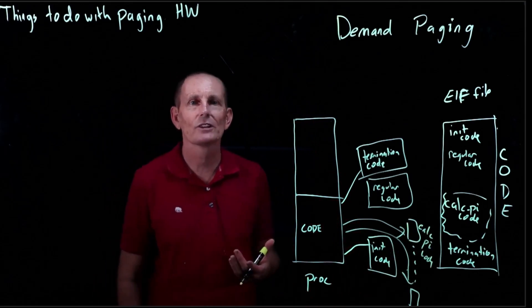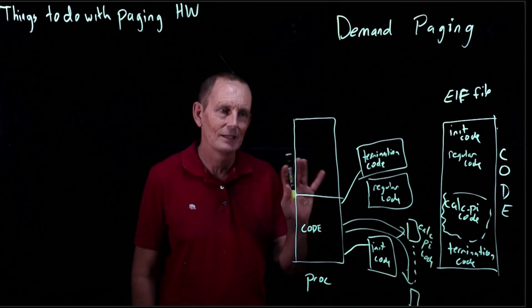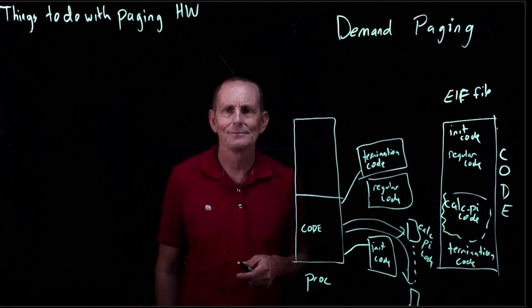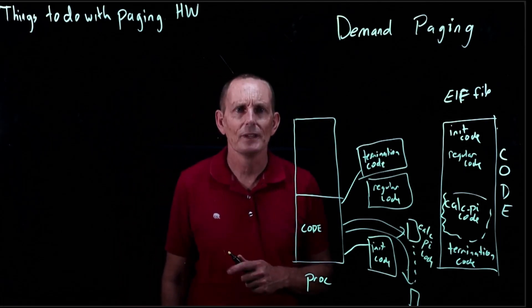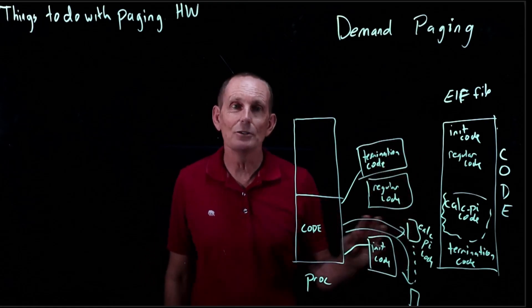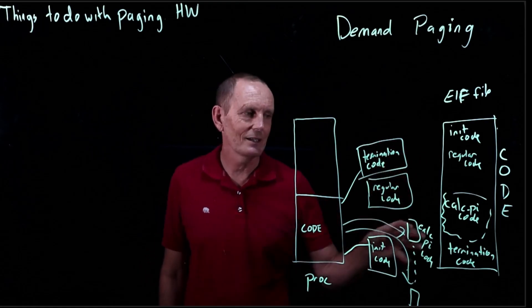Must have a very poor algorithm for calculating pi if we need lots of pages of code, but let's ignore that. So the question is, does this make sense? Is this efficient? And the answer is no.